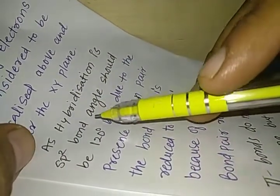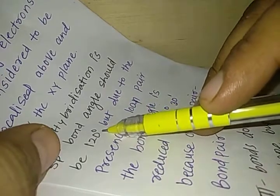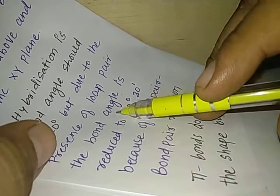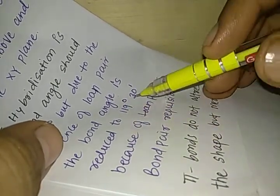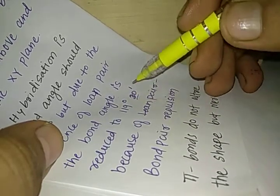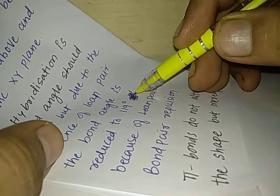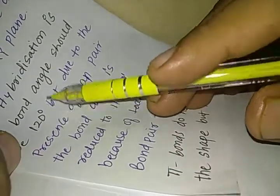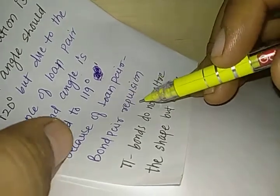As hybridization is sp2, bond angle should be 120 degree. But due to the presence of lone pair, the bond angle is reduced to 119 degree 30 minutes. Some people do not even show this 30 minutes. So we can just write 119 degree because in most of the cases I have observed them as 119 degree. So the bond angle is reduced from 120 degree to 119 degree because of the lone pair bond pair repulsion.